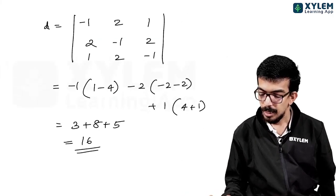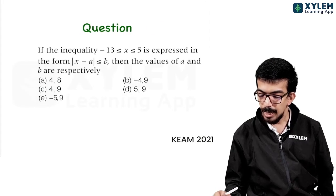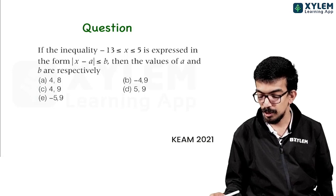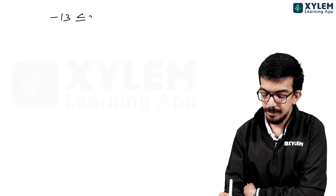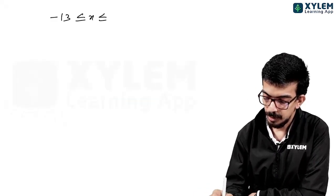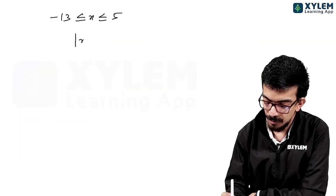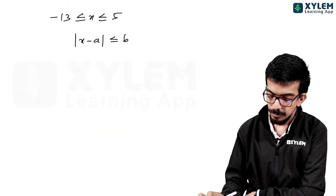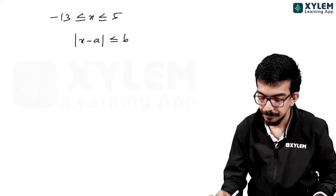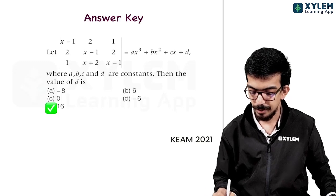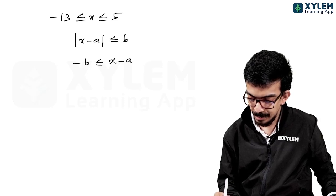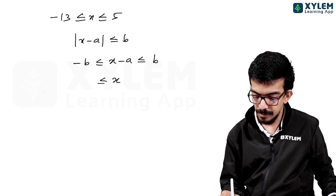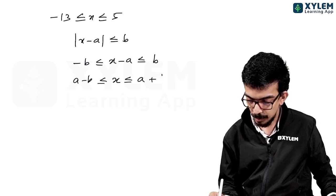Next question: the inequality -13 ≤ x ≤ 5 is to be expressed in the form |x - a| ≤ b. We know that |x - a| ≤ b means -b ≤ x - a ≤ b, which gives a - b ≤ x ≤ a + b.